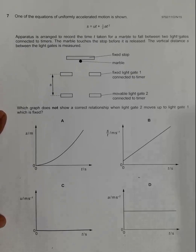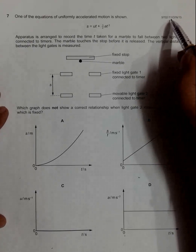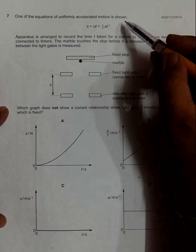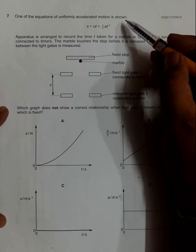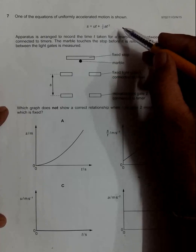Hello folks, this is a quick 2015 October November paper 1 question number 7. It says that one of the equations of uniformly accelerated motion is shown, which is s equal to ut plus half at squared.